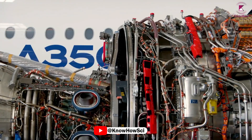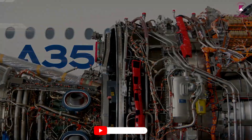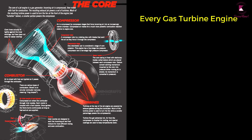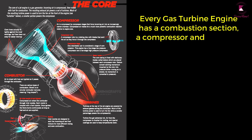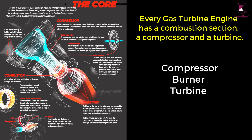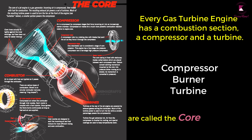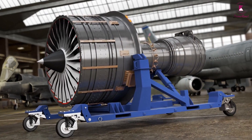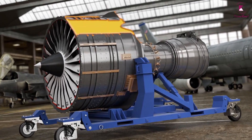As with other gas turbines, there is a core. Every gas turbine engine has a combustion section, a compressor, and a turbine. The compressor, burner, and turbine are called the core of the engine, since all gas turbines have these components.